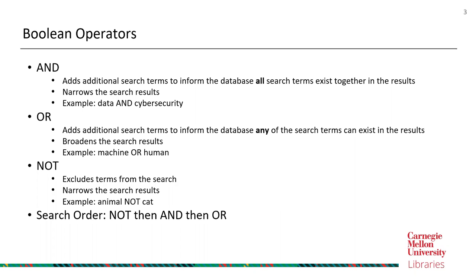The first boolean operator is AND. The AND operator adds additional search terms to inform the database that all search terms must exist together in the results — in other words, any additional keywords must co-exist with the existing keywords. AND narrows the search results. For example, 'data AND cyber security' means both terms must appear in the results.